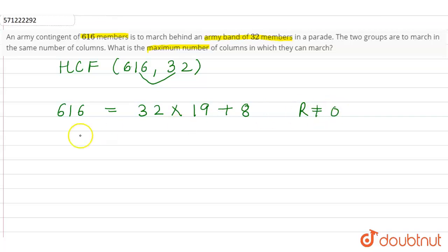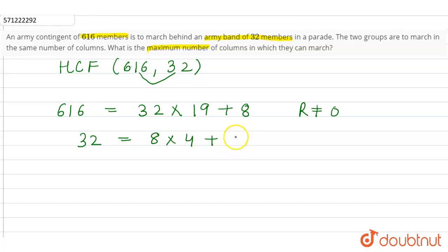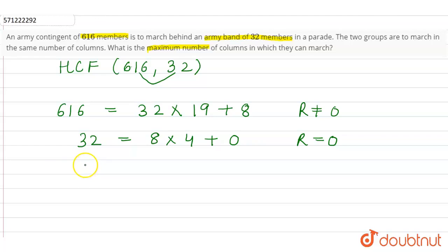We now divide 32 by 8. 8 into 4 is 32, so the remainder becomes 0. Since the remainder is equal to 0, we stop here. The divisor where the remainder is 0 is the HCF. So the HCF of 616 and 32 is 8.